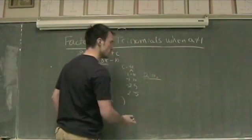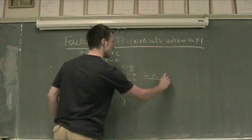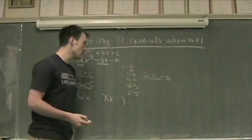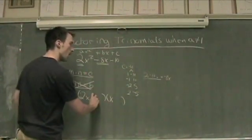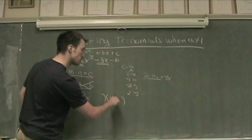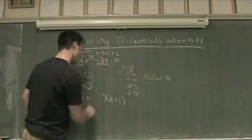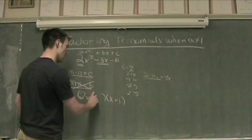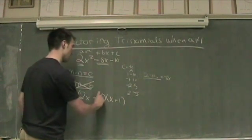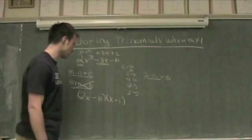2X minus 10X is actually equal to negative 8X. So 2X plus 1, we're going to place the plus 1 over here, and we have X minus 10 on our other side.